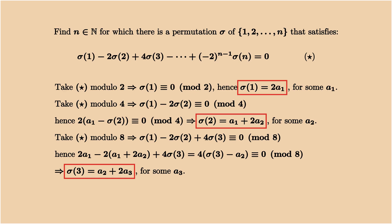So on and so forth. A simple induction shows that sigma k must have the same parity as ak minus 1. In other words, sigma k can be written as ak minus 1 plus 2 times ak for any k between 1 and n.